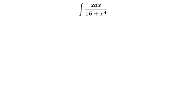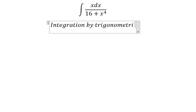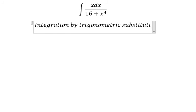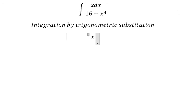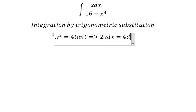To answer the question, we need to use integration by trigonometric substitution. We need to put x^2 equal to 4 tan t, so 2x dx equals 4 dt over cos^2 t.